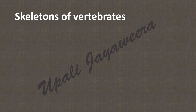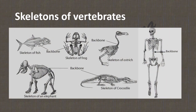Now refer to the skeletons of vertebrates. Here you can see the skeletons of fish, frog, ostrich, elephant, crocodile, and man. In all these you can find a backbone.